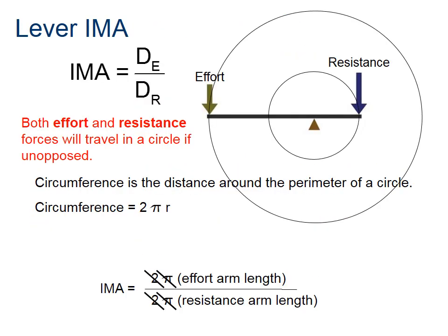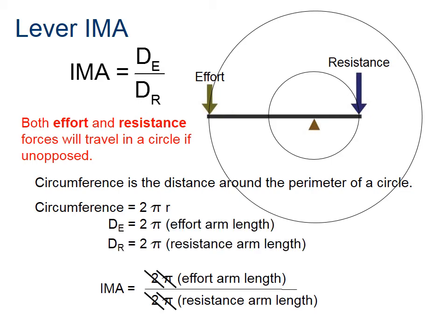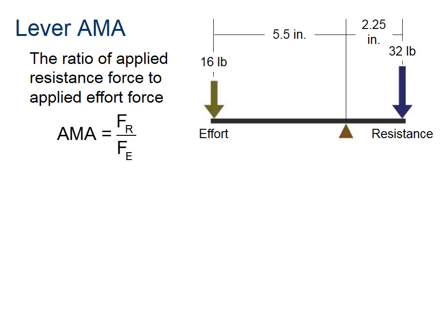Here's the key thing to know about rotational equilibrium: if you have only an effort force with no resistance, the lever will just keep spinning. Only when the resistance force times the resistance distance equals the effort force times the effort distance will the lever be in equilibrium. You don't need to know the full derivation — just know that key relationship.